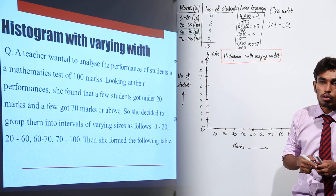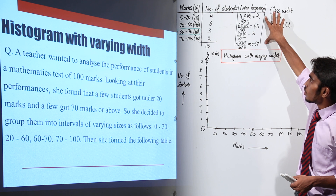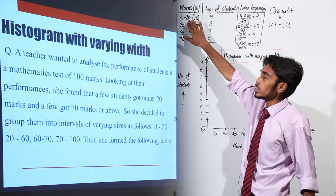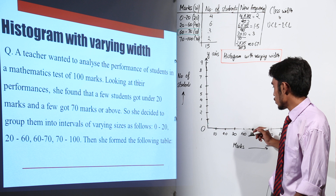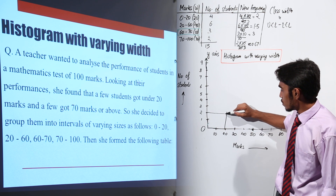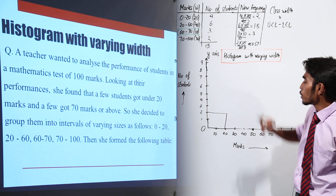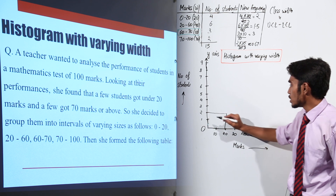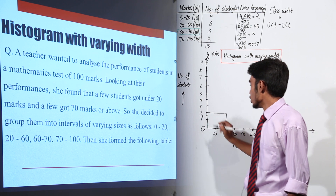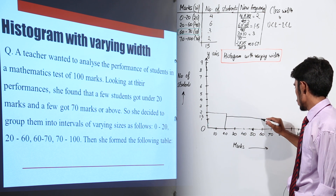So these are the new frequencies that we have obtained: 2, 1.5, 3, and 0.67. So let us try to plot these new frequencies on the y-axis and the corresponding class intervals on the x-axis. For the first class interval 0 to 20, the new frequency is 2. So for 0 to 20, we have 2 — this is the rectangle that we have got. Now for 20 to 60, the new class frequency is 1.5, and 1.5 will lie in between 1 and 2.